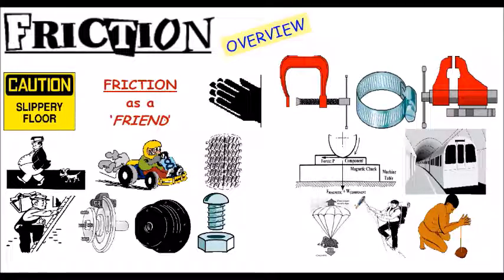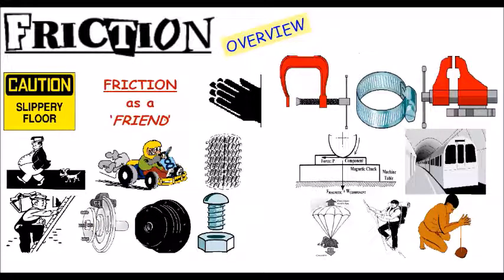Friction is one of those properties which is a friend or a foe, depending on your perspective. Without friction, there are many things we couldn't do. For example, we couldn't walk on a slippery floor easily - imagine trying to walk on an ice rink. We couldn't climb a ladder, use brake discs in our cars, or screw a nut and bolt together, because they work purely on friction forces. Tyres only grip roads because of friction.